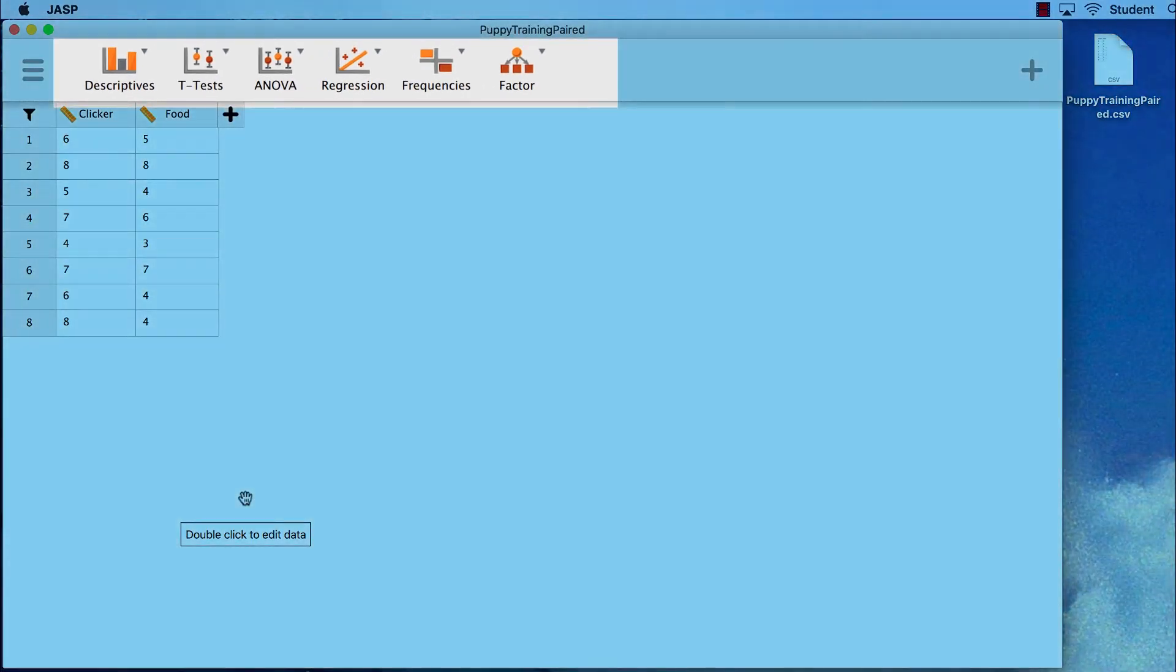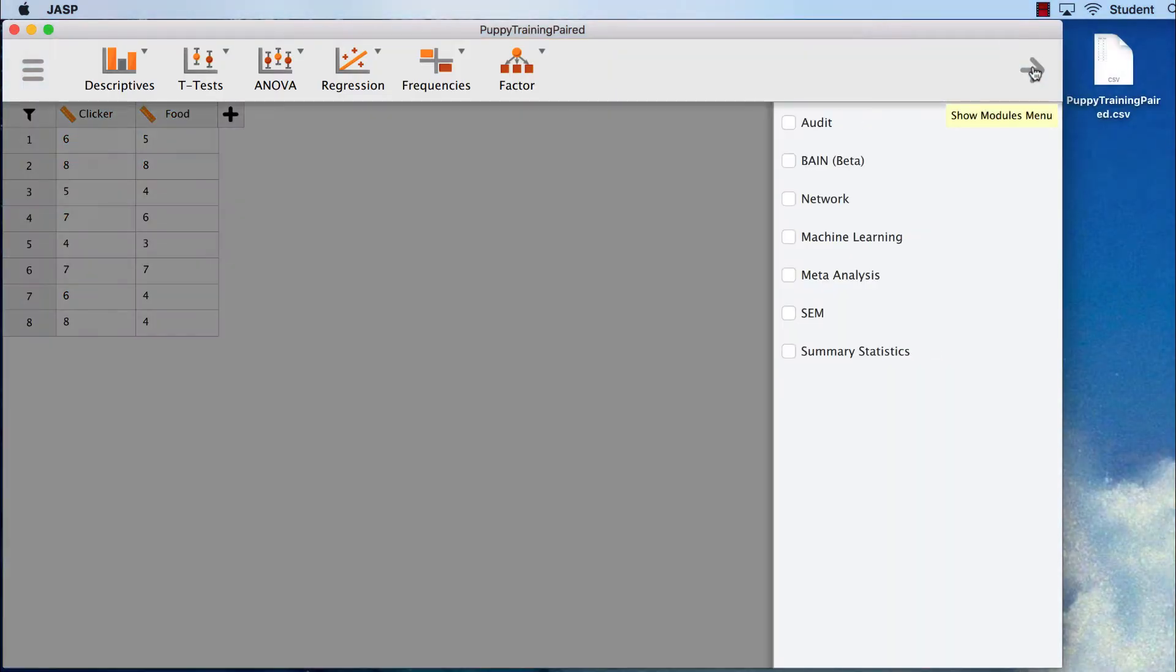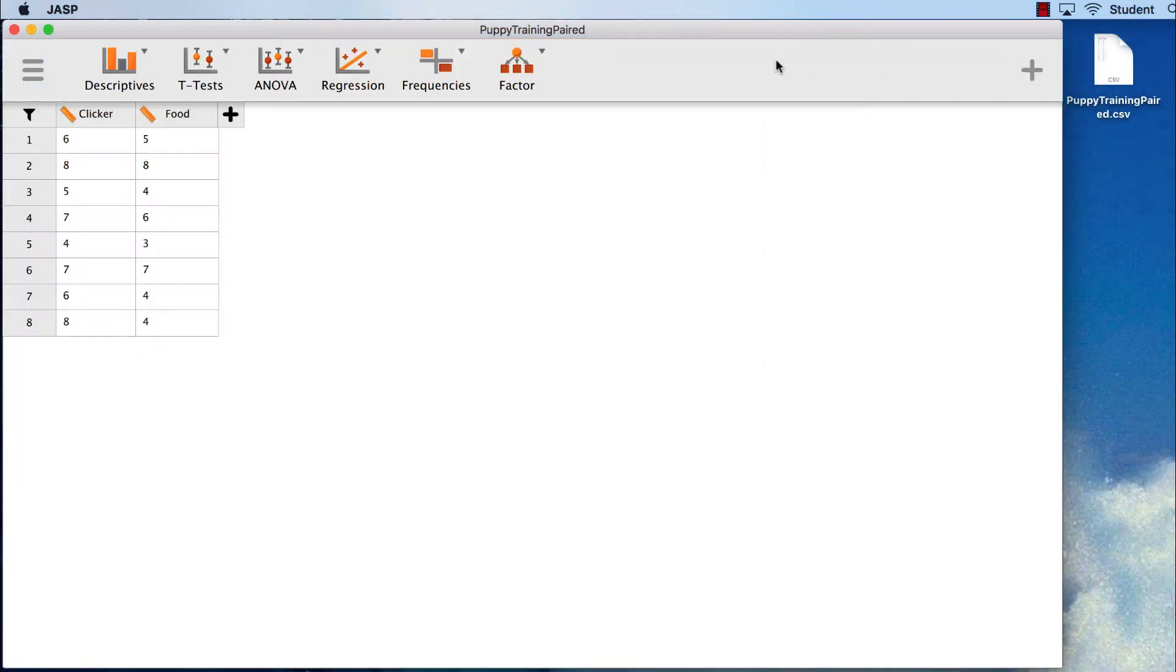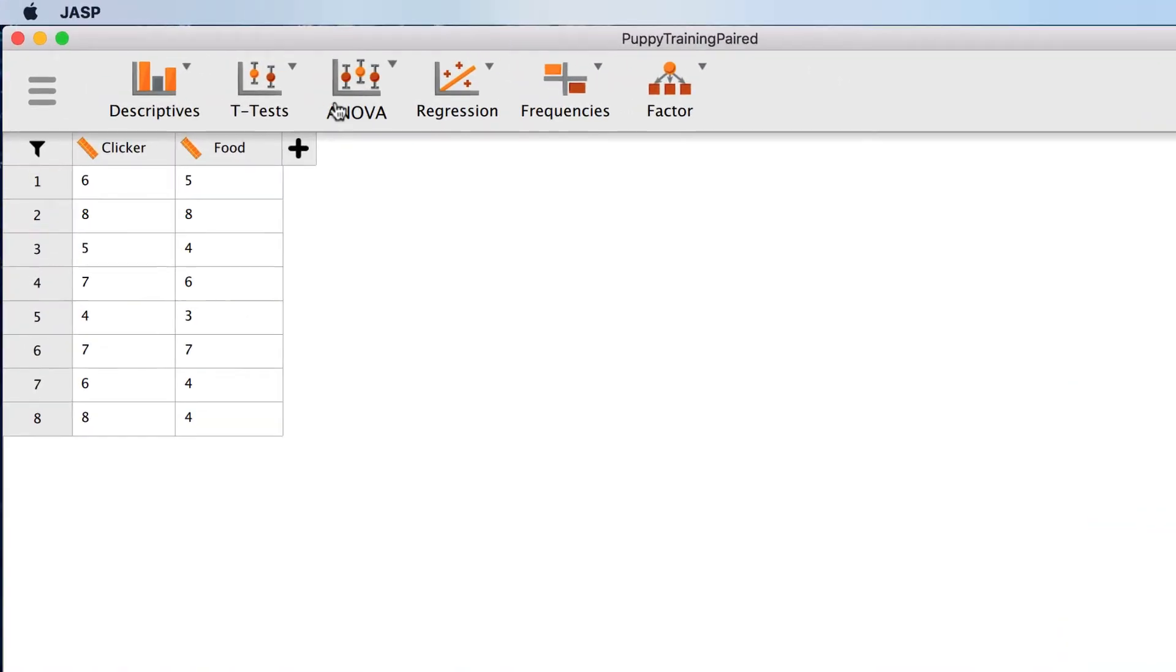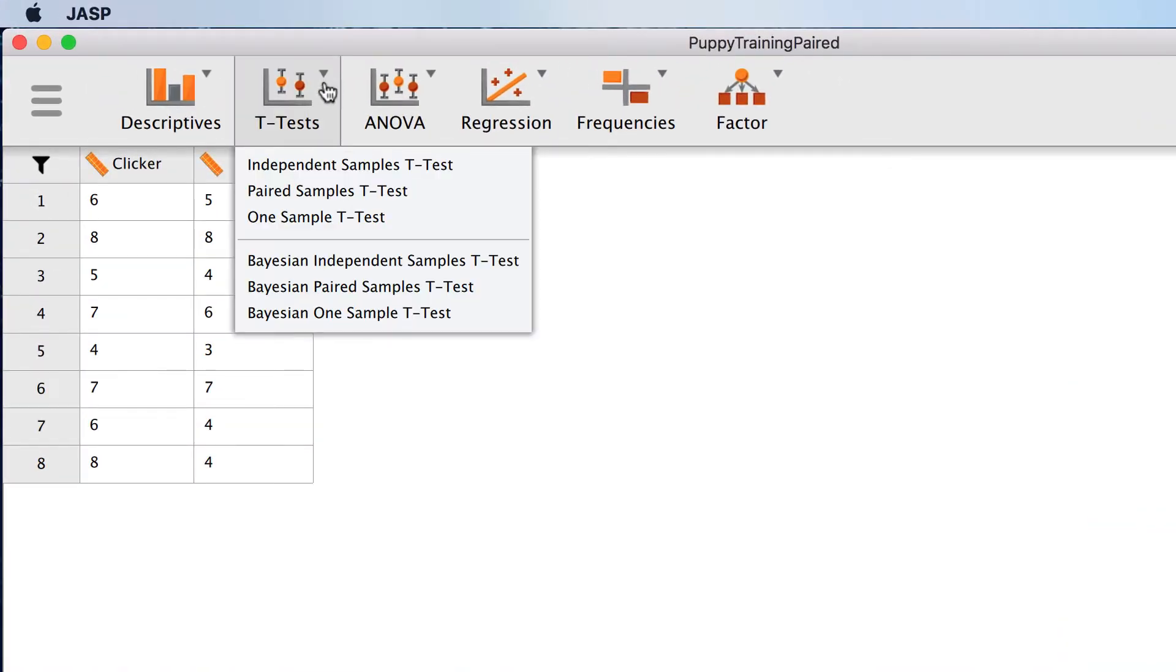Currently I have six basic analysis options available. I could add more modules with the plus sign, but I don't need to do that now. Basic modules are exactly what I need. Select t-tests, paired samples t-test.